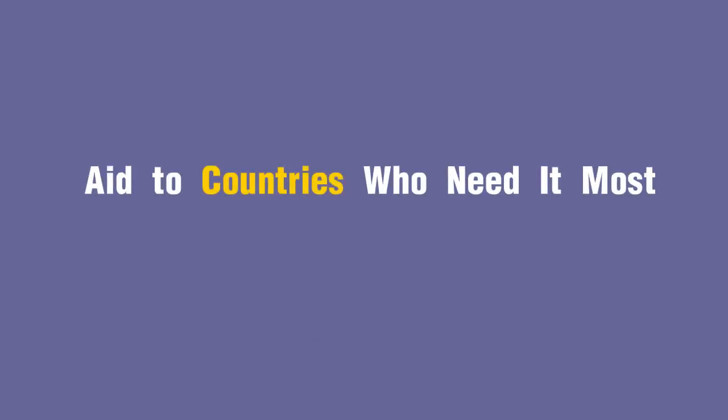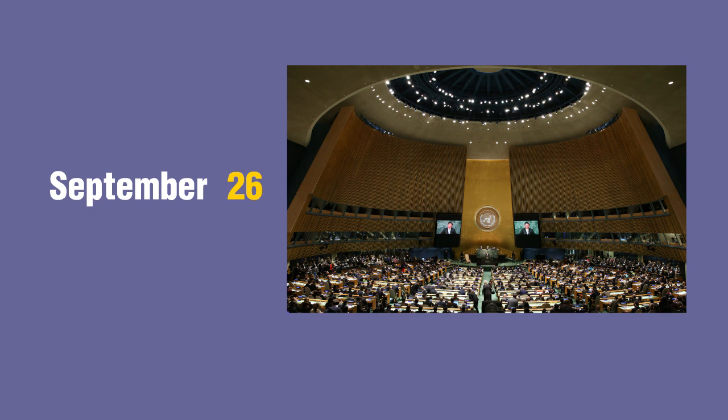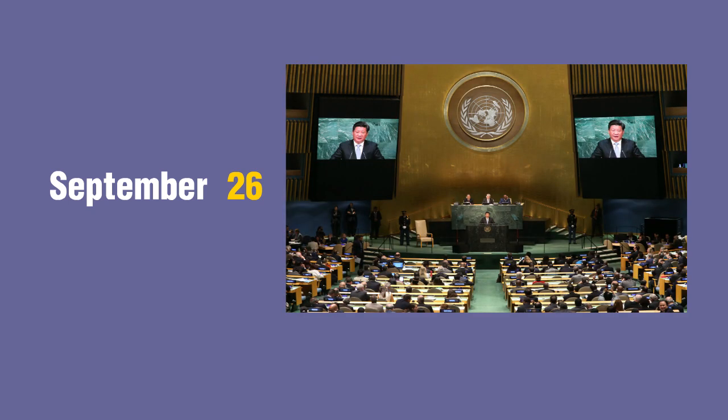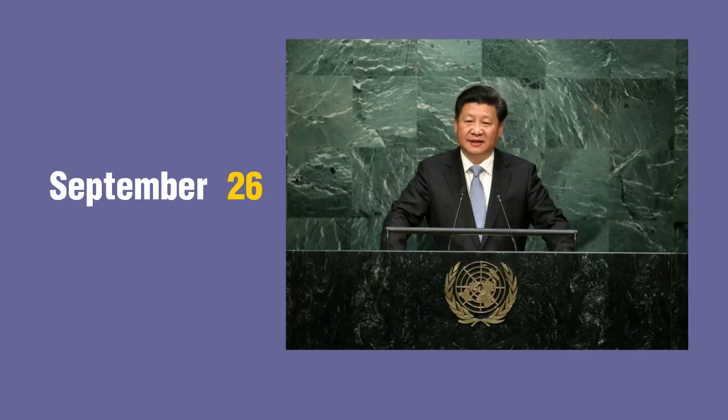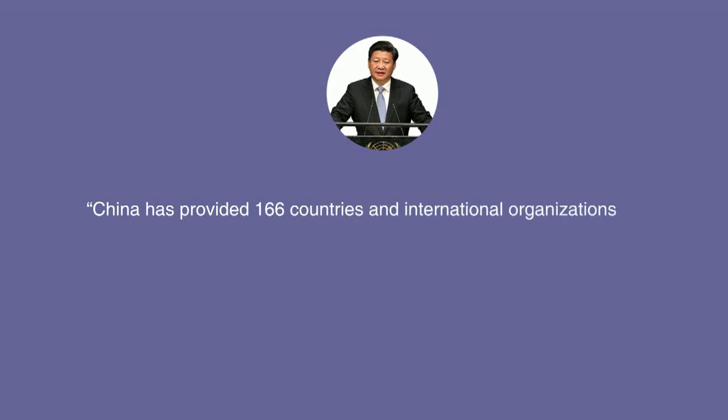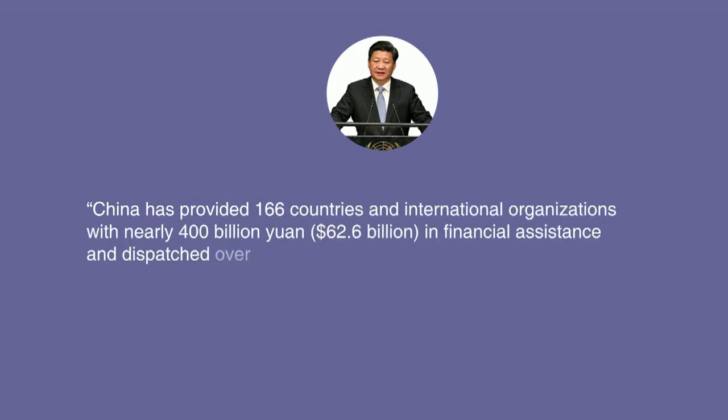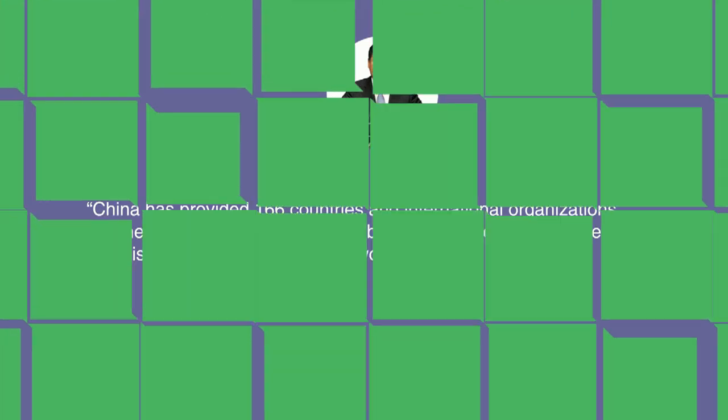Aid to Countries Who Need It Most. In his September 26 address at the UN Millennium Development Summit, President Xi Jinping outlined the hefty contributions China has made toward global development since the country's establishment in 1949, saying that China has provided 166 countries and international organizations with nearly 400 billion yuan or $62.6 billion in financial assistance and dispatched over 600,000 aid workers.